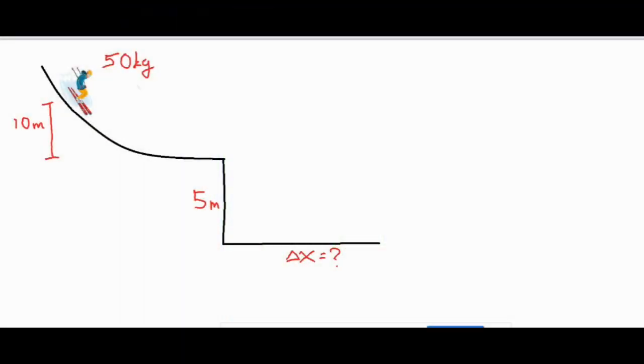In this video, we're taking a look at a skier problem where a skier goes down a slope, off an edge, and lands on the ground. We're going to find the landing position, the final delta x value. This is a two-part problem.